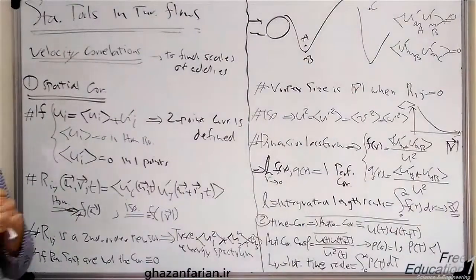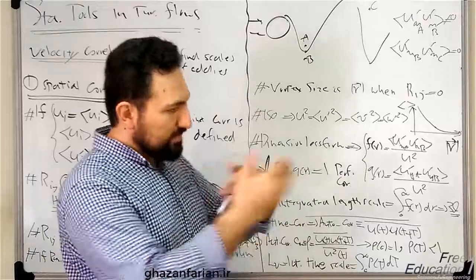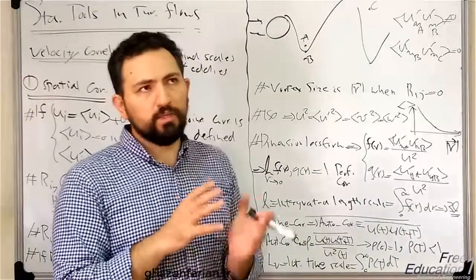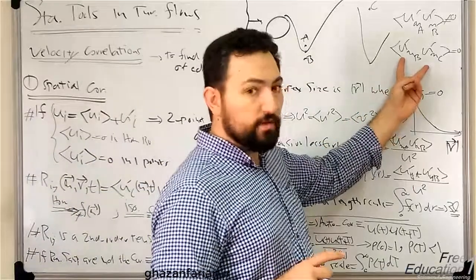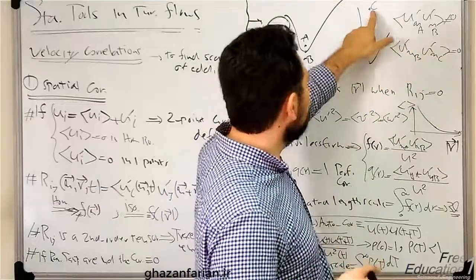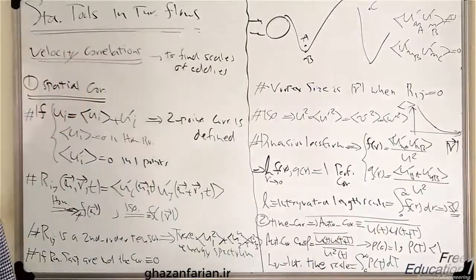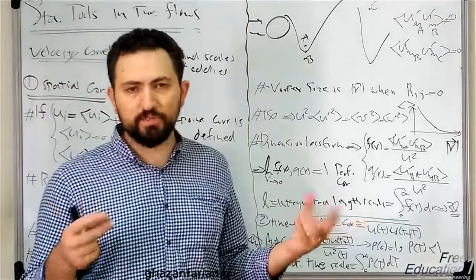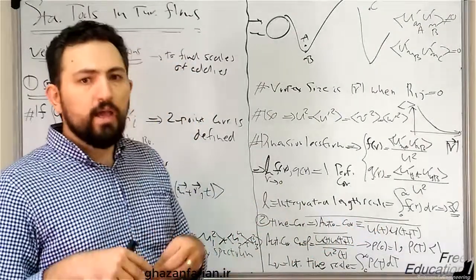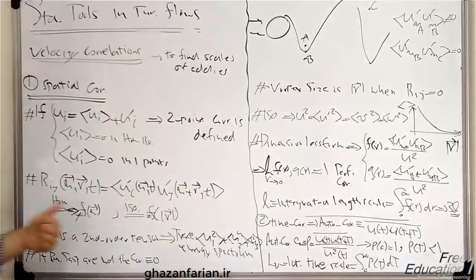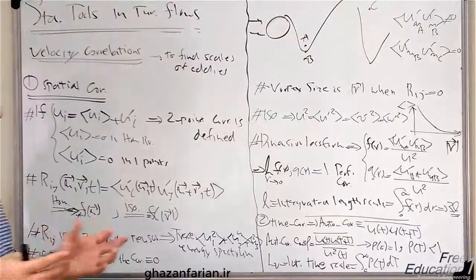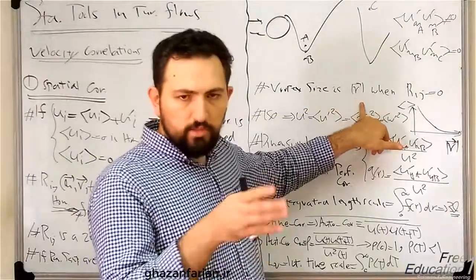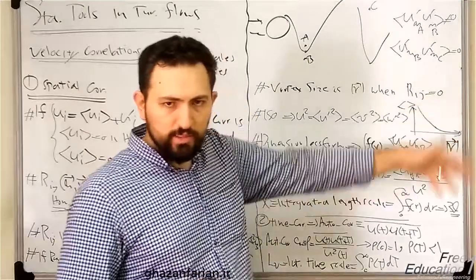Point C and these two points are statistically independent, so based on the turbulent definition they are not correlated to each other. If you compute the ensemble average of the product of velocity fluctuations in the x-direction at point C and point B, the result will be zero. Based on this definition, we can define the size of a vortex or eddy: the eddy size is the length of the r-vector at which the velocity correlation tensor R_ij is zero. This means the point is outside the vortex.